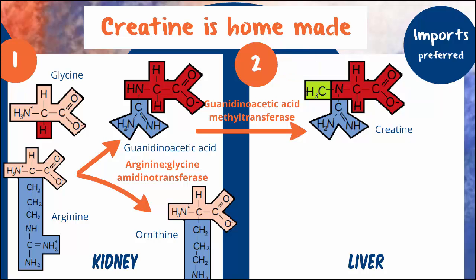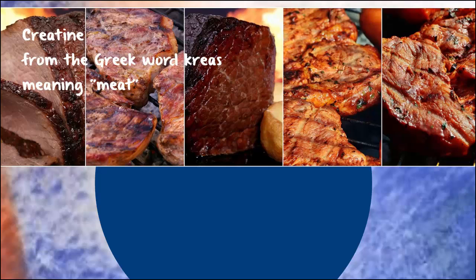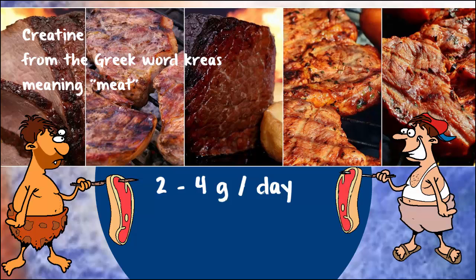The chemistry is pretty easy, but those methyl groups are precious, so creatine imports are preferred. The major source of dietary creatine is meat. In fact, the name 'creatine' is derived from the Greek word for meat, 'kreas.' It's estimated that our ancestors ate 2–4 grams of creatine a day — something most modern humans aren't doing.